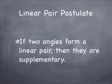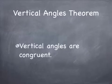The linear pair postulate says if two angles form a linear pair, then they are supplementary. A linear pair is two adjacent angles that form a straight line. A straight line measures 180 degrees, and angles that add up to 180 degrees are supplementary. The vertical angles theorem states that vertical angles are congruent — something we already know, but now we're putting a name to it: the vertical angles theorem.